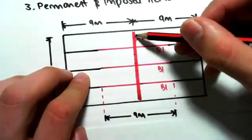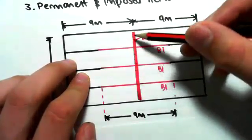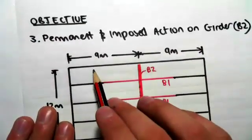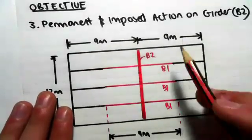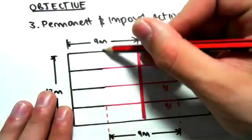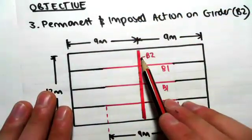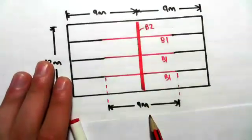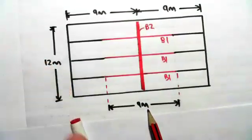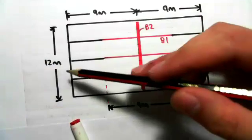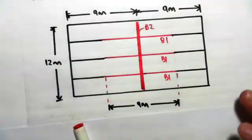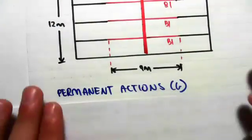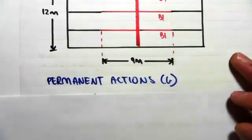We also have the girder B2's own self-weight. Because it's 9 meters and 9 meters there, we can divide by 2, so we have 4.5 going each way, giving a total of 9 meters. The length of this girder is 12 meters. The first thing we're going to do is find the permanent action G, the dead load, in the girder.